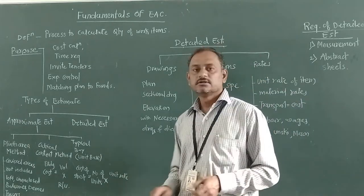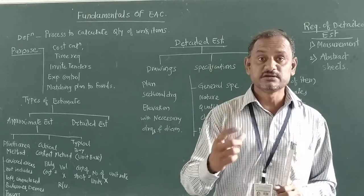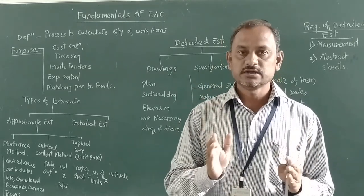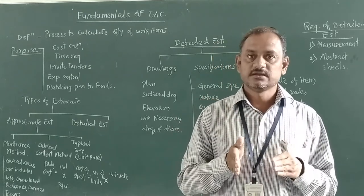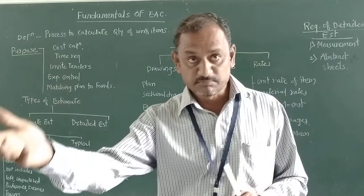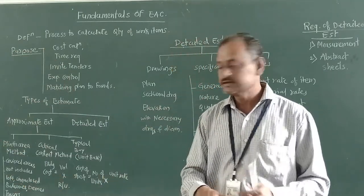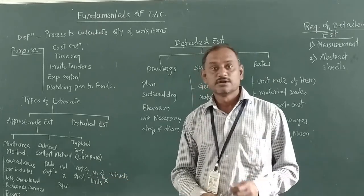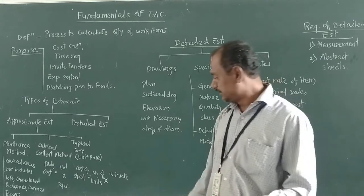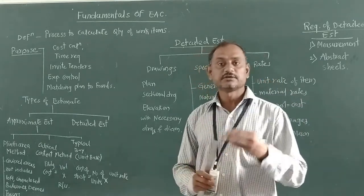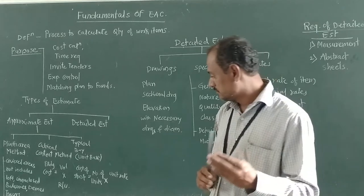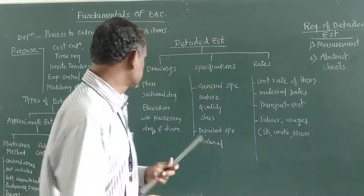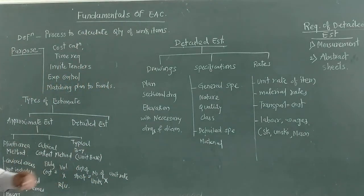In the typical bay method, the building is divided into a similar number of bays. Once we know the size of one bay, we multiply by the number of bays to get the cost of that structure. So the cost of that structure equals the number of units or bays multiplied by the unit rate per bay or unit rate per structure. These are the various types of approximate estimate.